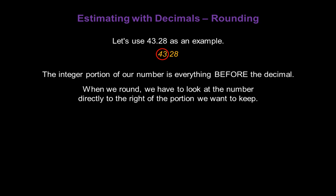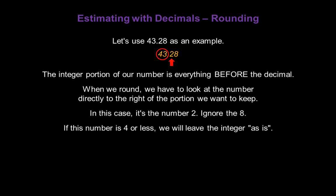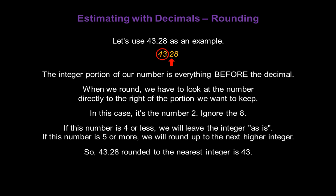When we round, we have to look at the number directly to the right of the portion we want to keep. In this case, it's the number 2, and we're going to ignore the 8. The 8 is not going to figure into our rounding at all. If this number is 4 or less, we will leave the integer as it is. If this number is 5 or more, we will round up to the next higher integer. So in this case, 43.28 rounded to the nearest integer stays as 43.